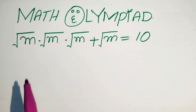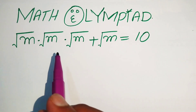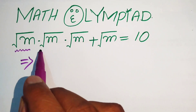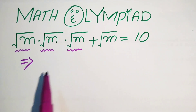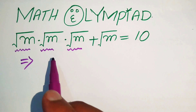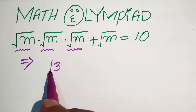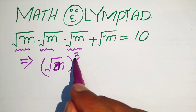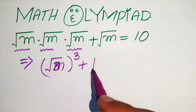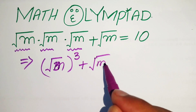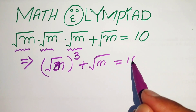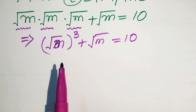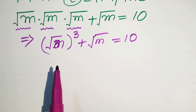The very first step is to simplify this equation. You can see that the square root of m is multiplied three times. So we write this expression as the square root of m, whole cubed, plus the square root of m, equals 10. After that, we convert this radical equation into a simple cubic form.